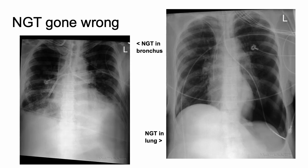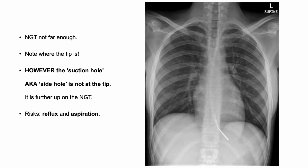Now let's go over a couple of NG tubes gone wrong. The previous slide showed a correctly placed NG tube. Here is an NG tube in the bronchus, and here is an NG tube in the lung. It's nice to see some wrong ones before looking at a right one.